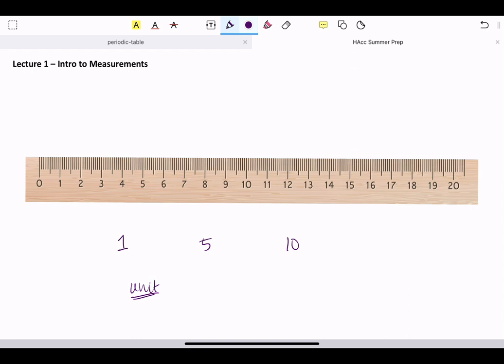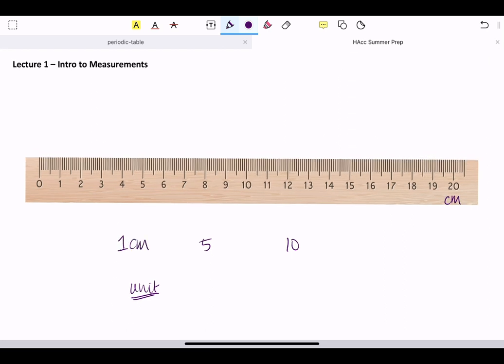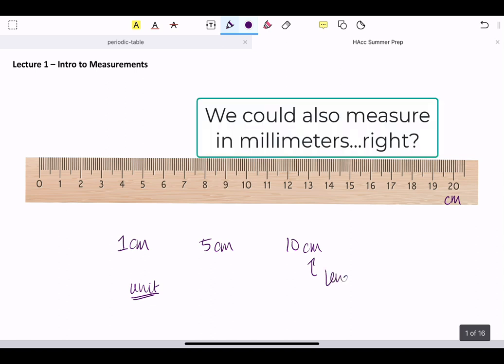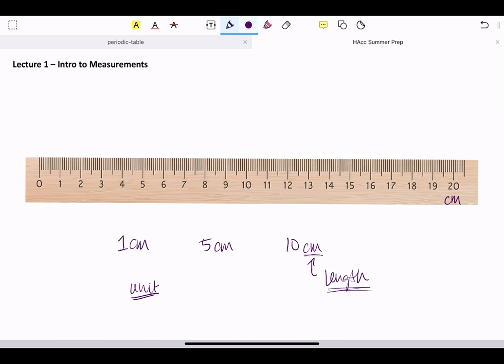For example, with this ruler, this is a centimeter ruler. So I could say 1 centimeter, 5 centimeters, or 10 centimeters is what I would be measuring. This is a measure of length. So I'm measuring length in centimeters. Length is my quantity, my unit is centimeters.